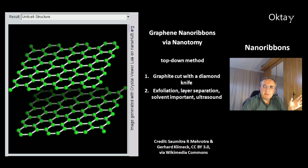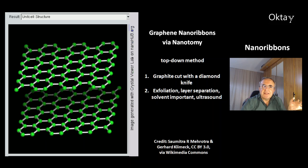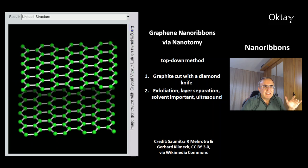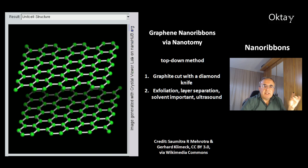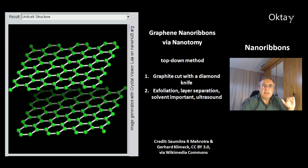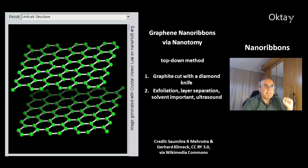This is another method to make graphene nanoribbons called nanotomy — a top-down method. The first step is cutting graphite with a diamond knife. The second step is exfoliation, which is the separation of the layers. The solvent is very important here because it has to penetrate between the layers, and the exfoliation is accomplished with ultrasound.